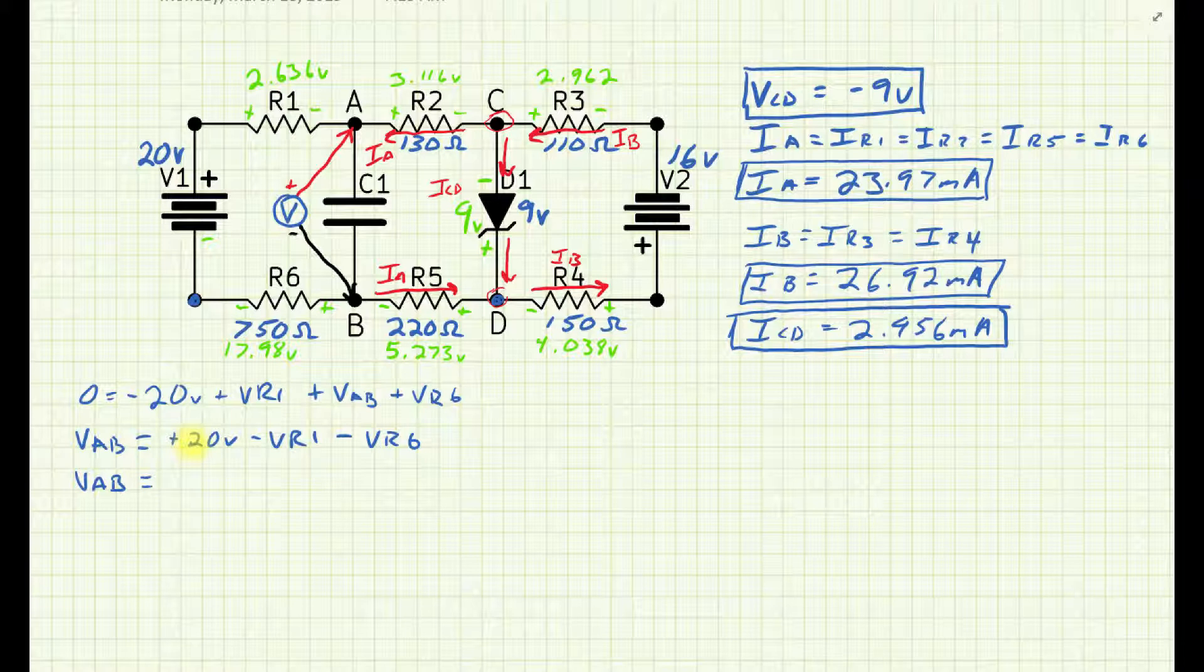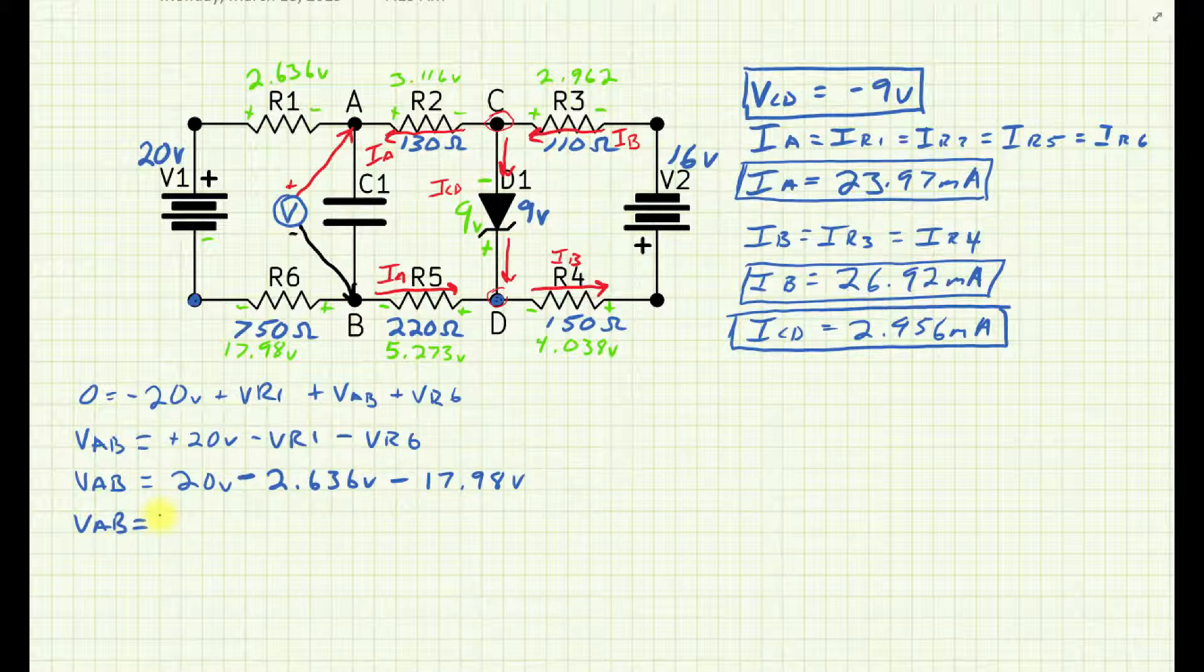And I'm through that capacitor or through that AB area. And I'm coming around. I'm hitting R6, the plus side. So plus VR6. Well, now we do have some numbers, but let's solve for VAB. So VAB equals, now I'm doing some algebra here. And so VAB is positive. So I need to move all these other terms to the other side. So plus 20 volts minus VR1 minus VR6. So VAB equals 20 volts minus VR1 which is 2.636 minus VR6 which is 17.98 volts. So VAB must equal, let's get the calculator out. 20 volts minus 2.636 minus 17.98. I'm getting only a value of minus 0.601616 millivolts, which is not very much.